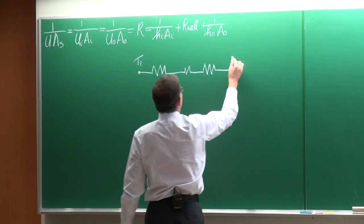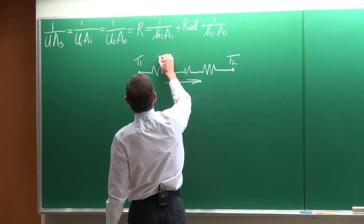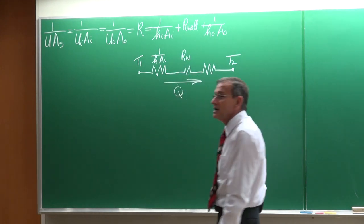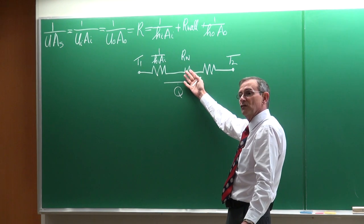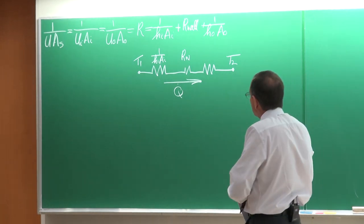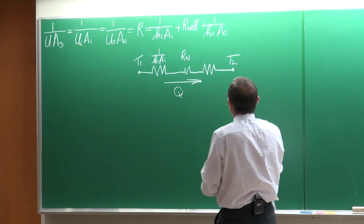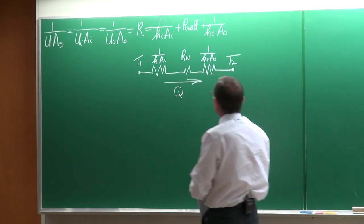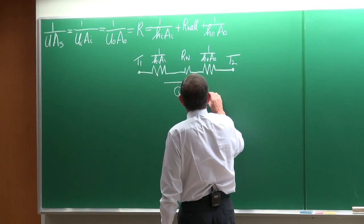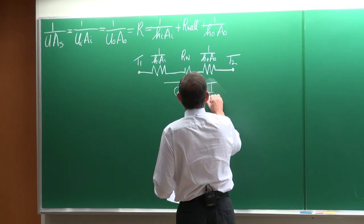This is a temperature difference T1 and T2. There will be a heat transfer rate in that direction, with the resistance 1 divided by the heat transfer coefficient on the inside — the convective resistance on the inside — plus the resistance of the wall. The wall resistance can be written in different formats: for a plane wall it is thickness divided by KA; for a cylindrical geometry it is the natural log of the diameter ratios divided by 2πKL. This overall heat transfer coefficient can then be written as delta T divided by the total resistance.